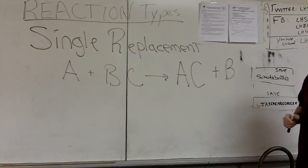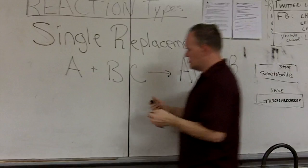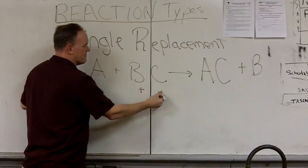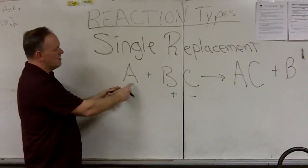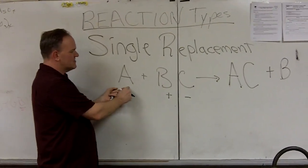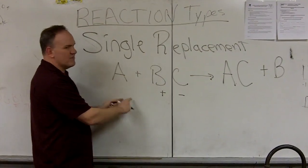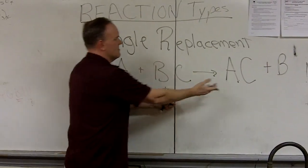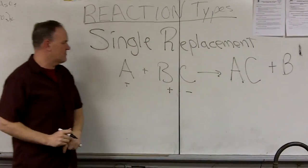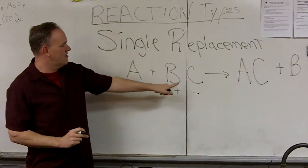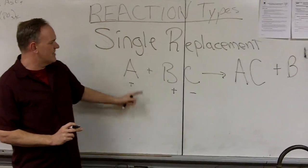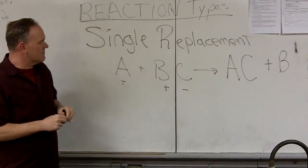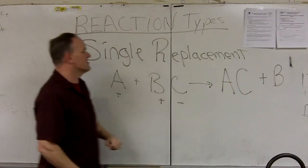Now, which one it goes with does matter in chemistry. As you know, the way that we write formulas, we have the positive guy first and the negative guy second. And so whatever this is, if it's going to leave with one of those, it's actually going to depend on what it is. If this is a positive thing, it would have to leave with the negative, as it did in this example. If A were to leave with B instead, that would imply that A was a negative thing, which happens sometimes as well. So you've got to be careful not to put a positive with a positive.